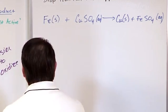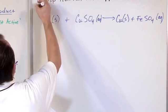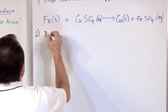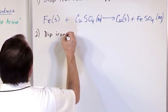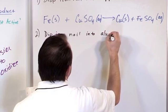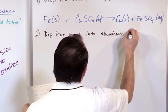All right, so let's do another problem. This was problem one. Let's do problem two. What's going to happen if you dip an iron nail into aluminum sulfate?